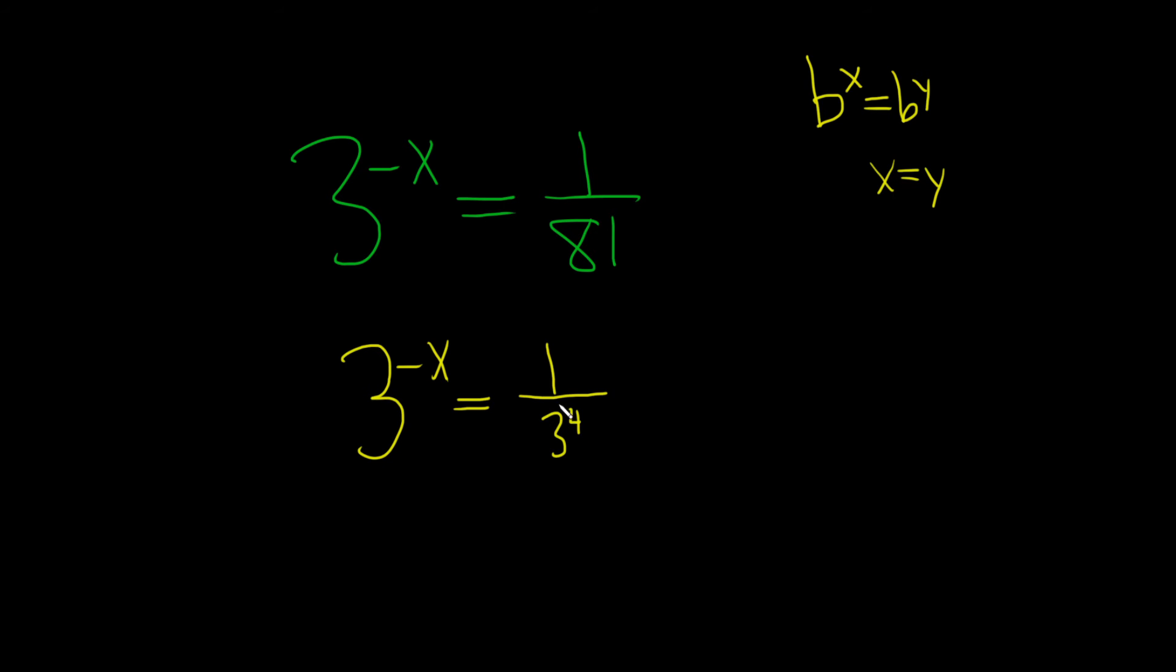We're not quite there yet because the 3 to the 4th is on the bottom. It needs to come up. So what we'll do is we'll keep the left-hand side the same, 3 to the negative x. Then we'll take this piece and bring it up. And when you do that, the exponent becomes negative.